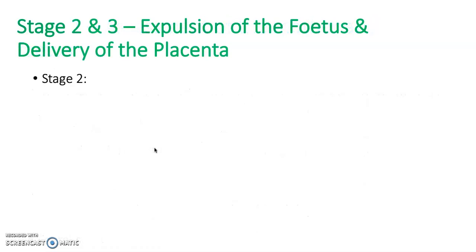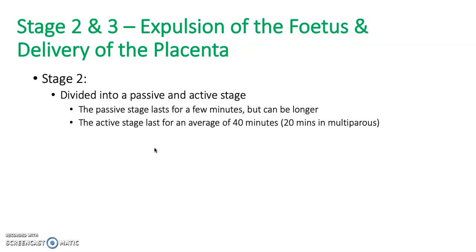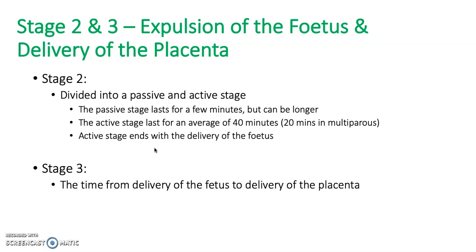Stages two and three are expulsion of the fetus and delivery of the placenta. Stage two is divided into the passive and active stages. The passive stage lasts a few minutes but can be longer. The active stage lasts an average of forty minutes, or twenty minutes in multiparous women, and ends when the fetus is delivered. Stage three is the time from delivery of the fetus to delivery of the placenta; it lasts around fifteen minutes and normal blood loss is around 500mls in a normal vaginal delivery.